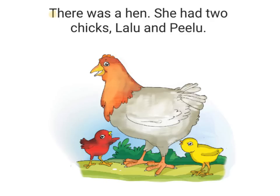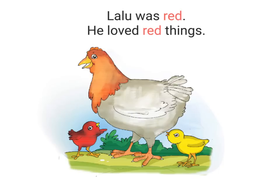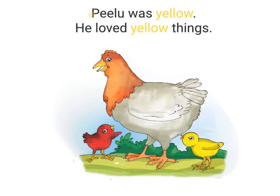There was a hen. She had two chicks, Lalu and Pilu. Lalu was red. He loved red things. Pilu was yellow. He loved yellow things.